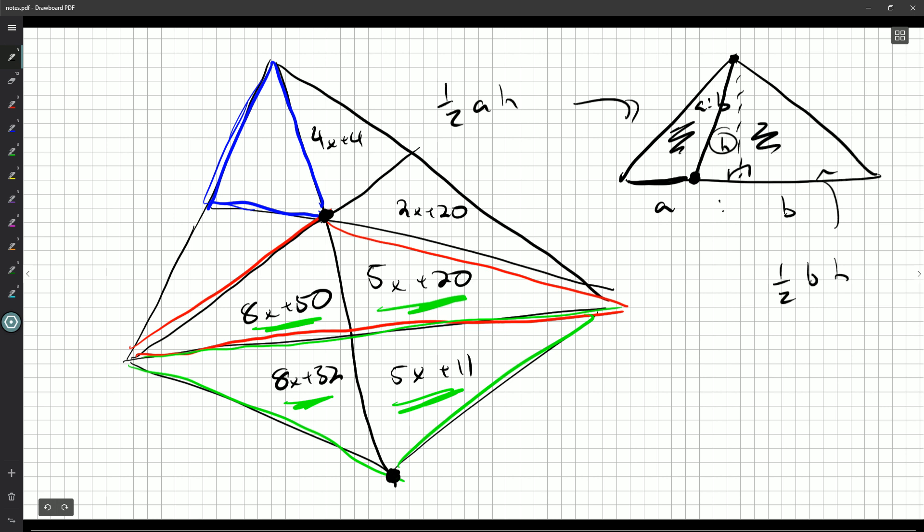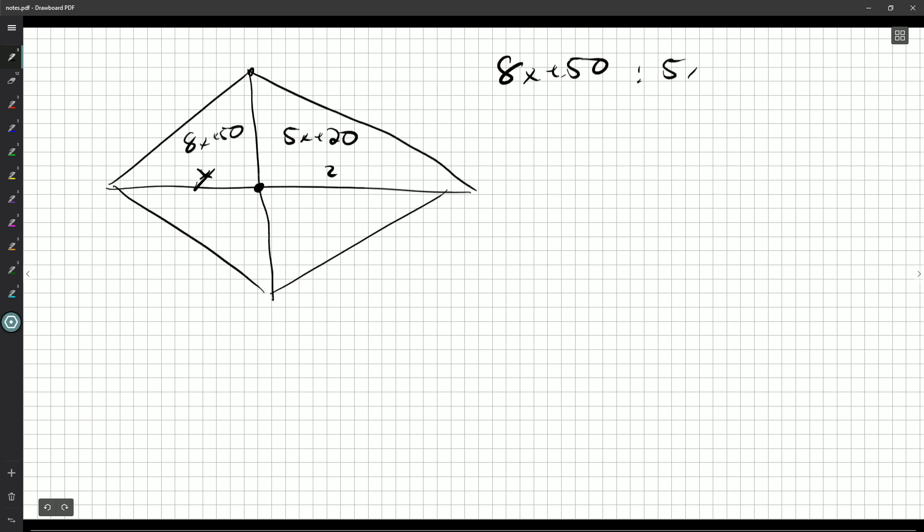Now, how does that help? We're not talking about side lengths, and that's absolutely true. But if I look at these two triangles, they share the same base and they've got lines that are splitting the base in the same way. So whatever the ratio is here, the areas must have that same ratio. So 8X plus 50 is to 5X plus 20 as 8X plus 32 is to 5X plus 11. Now, we don't have to write them as ratios like this. We could turn them into fractions. So 8X plus 50 over 5X plus 20 is the same as 8X plus 32 over 5X plus 11. They have the same ratio.